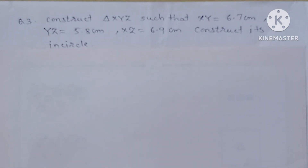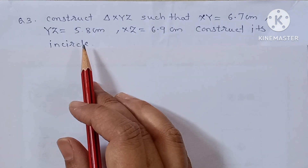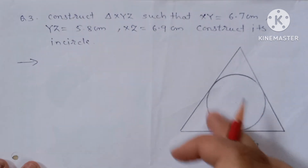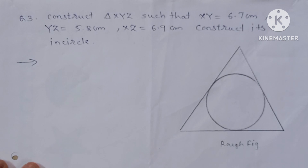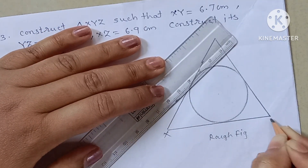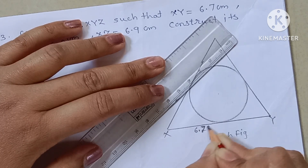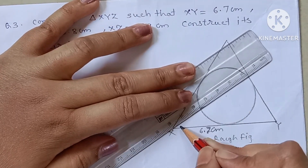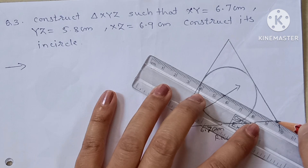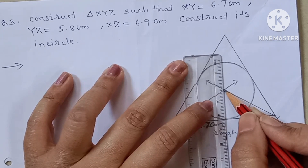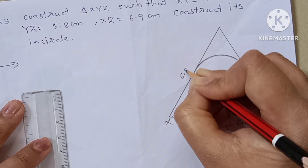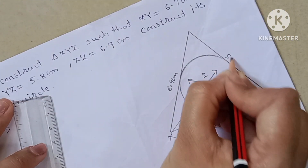Construct triangle XYZ such that XY is equal to 6.7 cm, YZ is equal to 5.8 cm, XZ is equal to 6.9 cm, and construct its incircle. This is your rough figure — first draw the circle, and outside the circle draw the triangle. For the incircle, you can bisect the angles. This is XYZ with XY = 6.7 cm, XZ = 6.9 cm, and YZ = 5.8 cm.